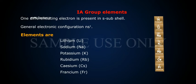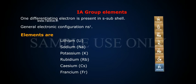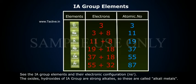Group 1A elements have one differentiating electron present in the S subshell. General electronic configuration: ns1. Elements are lithium (Li), sodium (Na), potassium (K), rubidium (Rb), cesium (Cs), and francium (Fr). See the Group 1A elements and their electronic configurations. The oxides and hydroxides of Group 1A are strong alkalis, so these are called alkali metals.